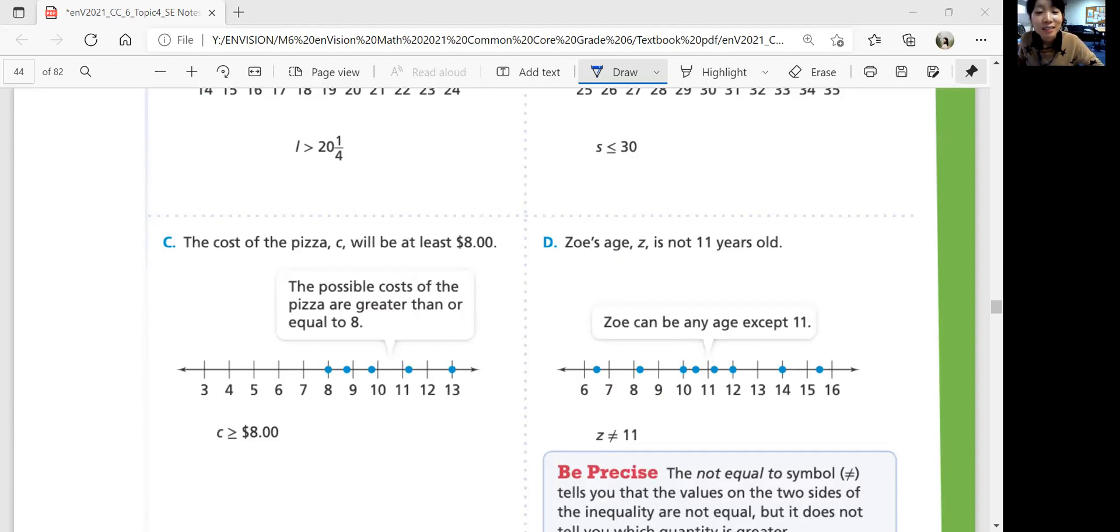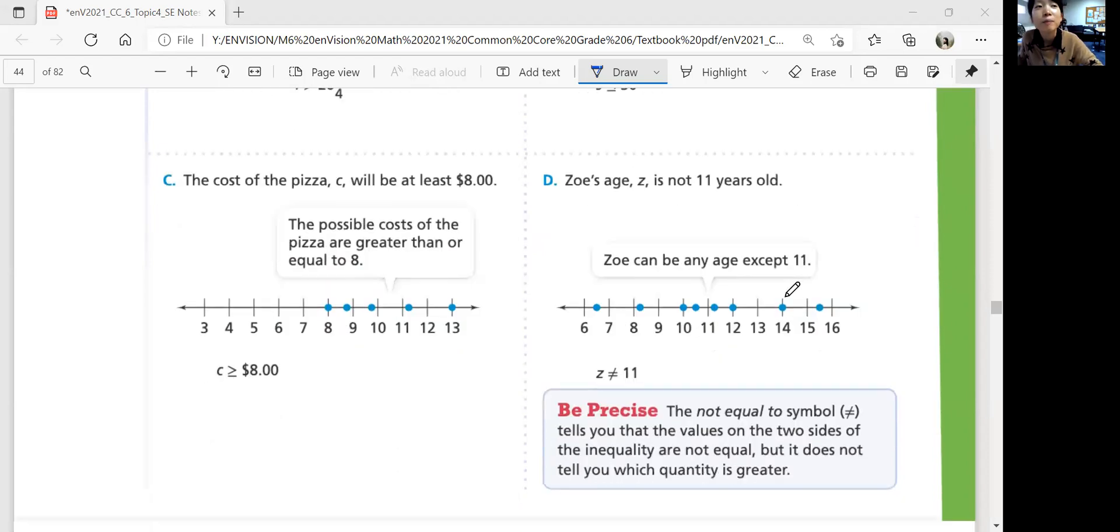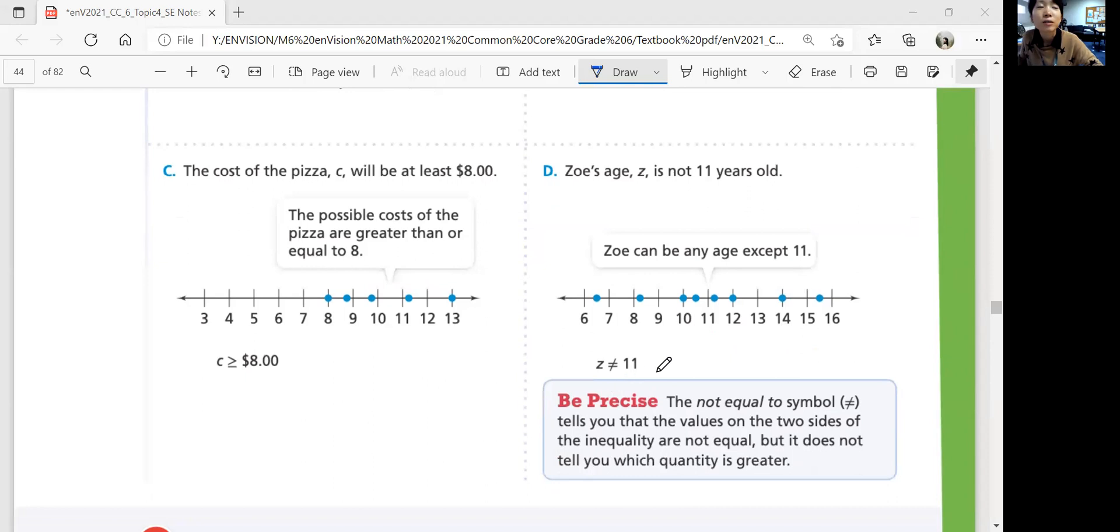And so that's going to be... Oh! All right. So it's greater than or equal to eight. Zoe's age is not 11 years old, which means it's not greater than. It's not less than. It's just not 11. Okay? Zoe's age is not equal to 11.